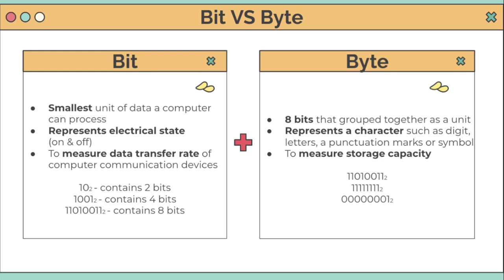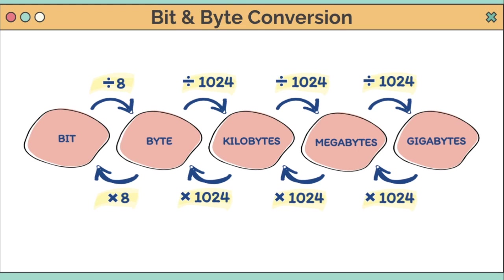A bit represents an electrical state — on and off — and is used to measure the data transfer rate of computer communication devices. For example: '10' contains two bits, '1001' contains four bits, and '11010011' contains eight bits. A byte is eight bits grouped together as a unit. A byte represents a character such as a digit, letter, punctuation mark, or symbol, and is used to measure storage capacity.